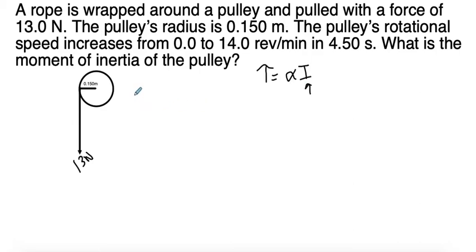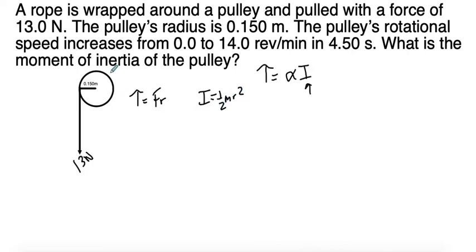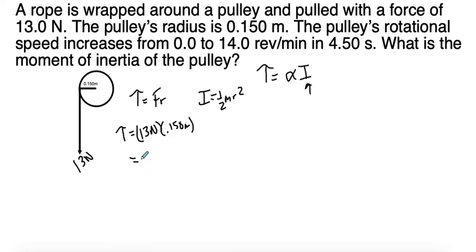We have torque equals angular acceleration times moment of inertia, and we're solving for moment of inertia. Torque equals force times radius, and for a disc (pulley), moment of inertia equals one-half mR squared. Torque is straightforward: 13 Newtons times 0.150 meters equals 1.95 Newton meters.